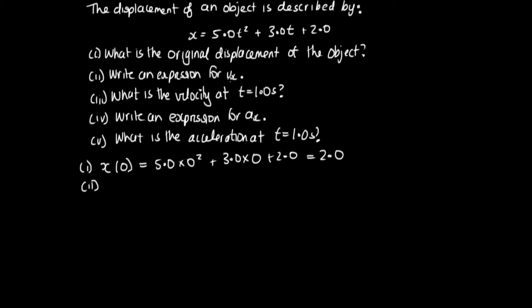Part 2: write an expression for v_x. We know velocity in the x direction is equal to dx/dt, so we need to differentiate our expression with respect to t. Differentiating 5t² gives 5 times 2t, differentiating 3t gives 3, and differentiating the constant 2 gives 0. So our expression is v_x = 10t + 3.